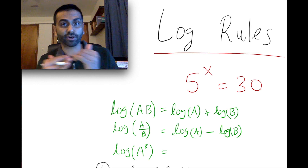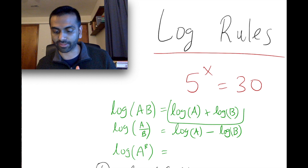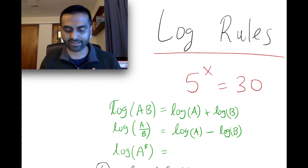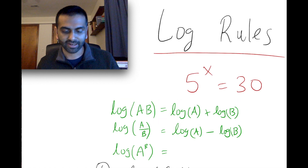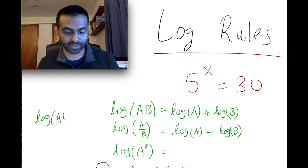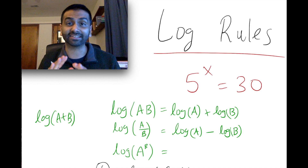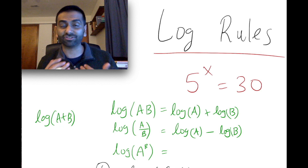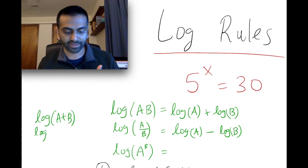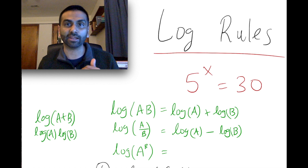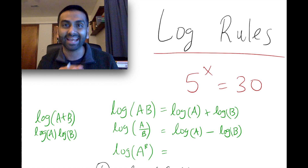You can use these rules in reverse — if you start with log of a plus log of b, you can combine those to write them as log of a times b. But what you can't do is simplify log of a plus b, because addition on the inside can't be simplified. Similarly, multiplication on the outside — log of a times log of b — you literally just can't simplify that. Same with division: log of a divided by log of b, you can't do anything with that.